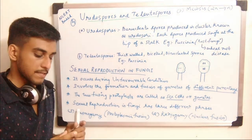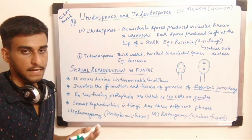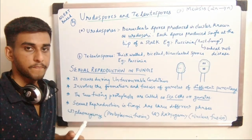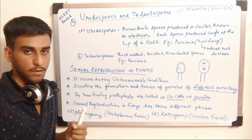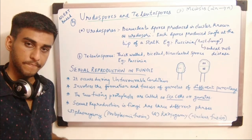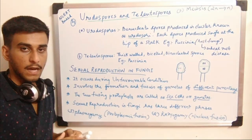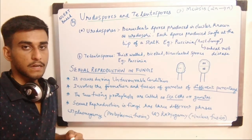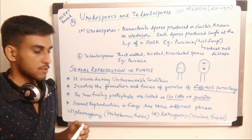The gametes contain nuclei — gametes are also known as sex cells. There will be a male gamete containing male nuclei and a female gamete containing female nuclei. These two gametes fuse together to form a cell known as the zygote.